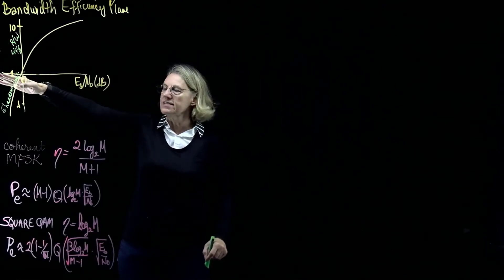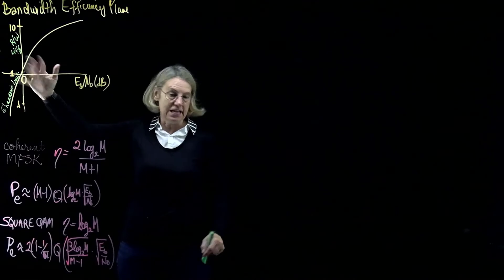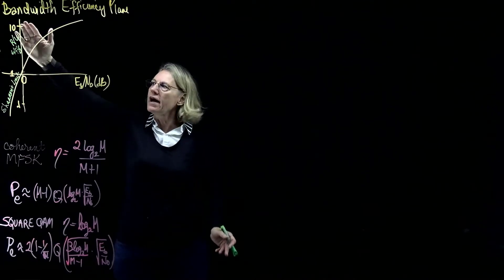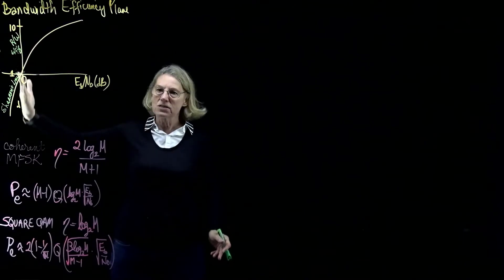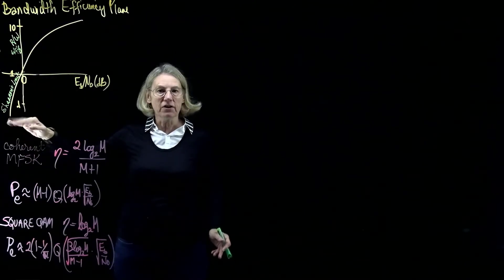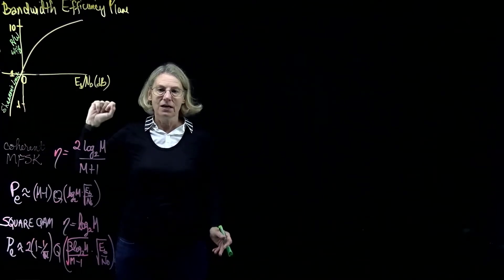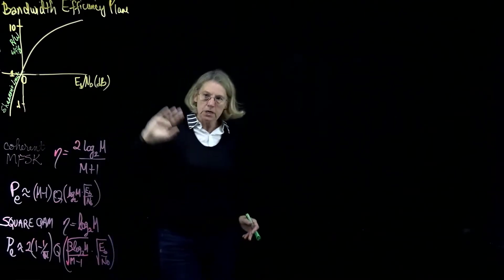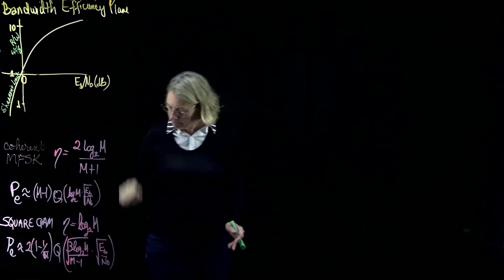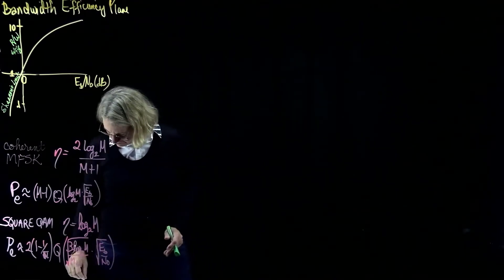We're just using exactly the bandwidth that we need. And then as we go up higher, we're putting more and more bits per second in the same spectrum. As we go down lower, of course, it's getting very spectrally inefficient because it's becoming fractional. So this is the bandwidth efficiency plane.